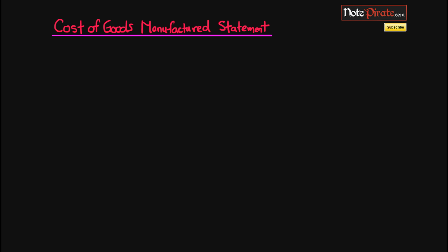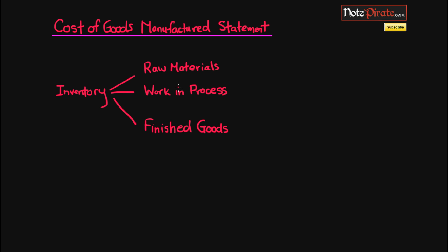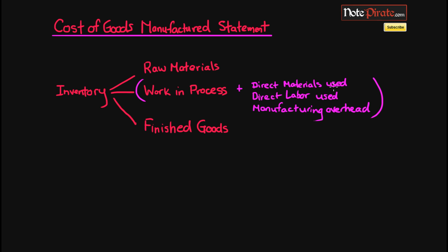Last time I was talking about how inventory — the account on the balance sheet — is subdivided into three sub-accounts: raw materials, work in process, and finished goods. If we take work in process and add three items — direct materials used, direct labor used, and manufacturing overhead incurred — we get a figure known as cost of goods manufactured. It's not the work in process balance that gets added, but the change in work in process — that's the delta symbol, which just means 'change in.'